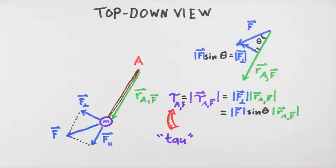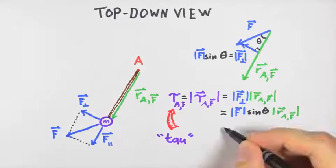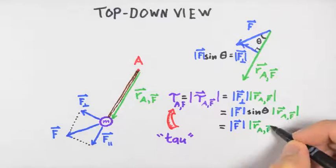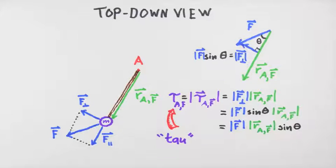Notice that in giving a physical description of the torque magnitude, we associated the trigonometric function sine theta with the magnitude of F. However, we could also just rearrange these terms to associate the sine theta term with the magnitude of the position vector that locates where the force F is applied relative to the axis. In other words, let's consider the magnitude of F multiplied by the product of the magnitude of r sub a F and sine theta.